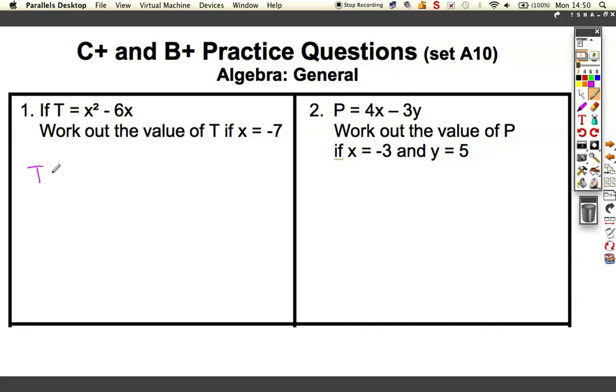Really, we want to find the value of t, so we want to find out what minus 7 is squared. That's minus 7 times minus 7. And then we want to take away 6 lots of x. In this case it's minus 7 as well. So I've laid it out like this, so it helps me to work out each bit individually.